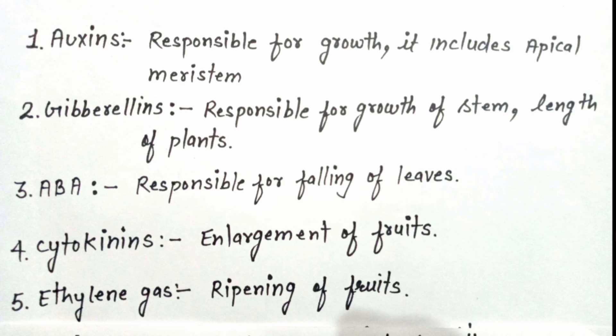The second type of hormone is gibberellin hormone, which is responsible for the growth of stem, length of the plant, and the height of the plant.